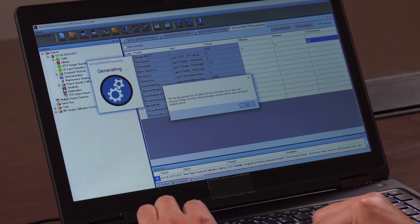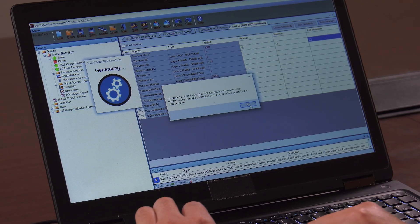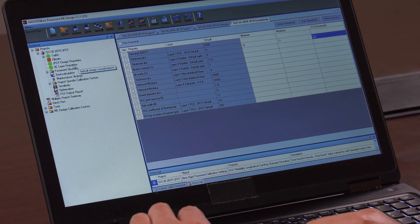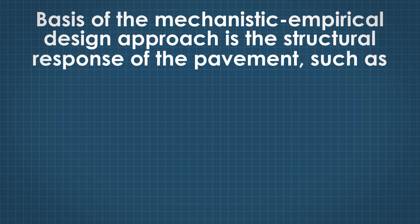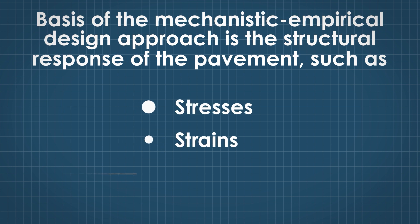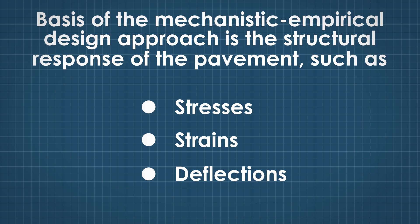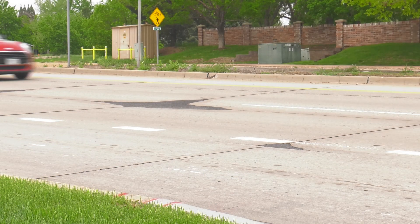The latest pavement design procedures employ mechanistic principles. The basis of the mechanistic-empirical, or ME, design approach is the structural response of the pavement — such as stresses, strains, and deflections — determined using mechanistic models.